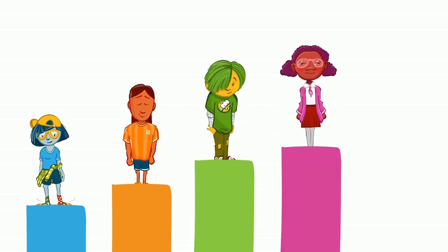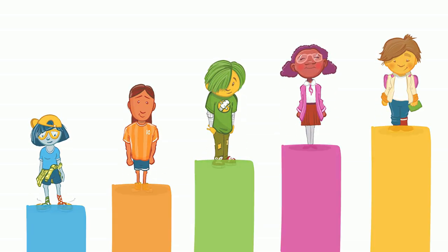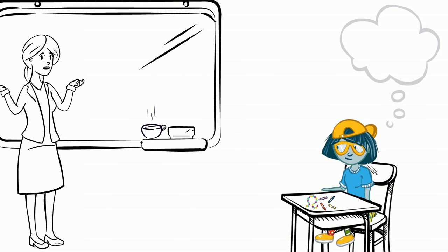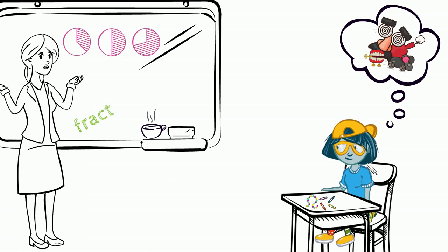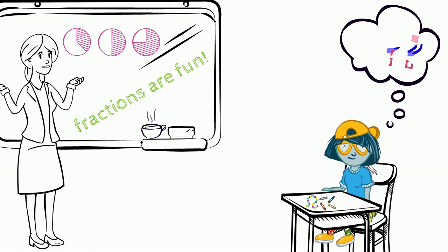Once when Angela was daydreaming about the next prank she was gonna pull and she was supposed to be listening to the lesson, Angela realized she had no idea what she was supposed to be doing.